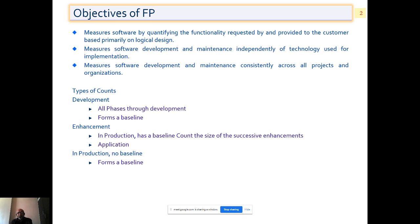So what are the objectives of function point metrics? They measure the software by quantifying the functionality requested by the customer and provided to the customer. Therefore, it is totally user-based. It measures software development and maintenance continuously all around the projects and organizations. So all phases of development are covered: enhancement, support, how it affects the cost parameters. In production, it forms a baseline. Three users have been there for accounts: development, enhancement, and production.